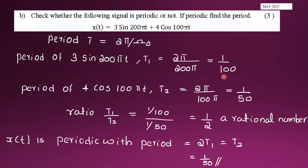Next problem: check whether the following signal is periodic or not, and if periodic find the period. x(t) = 3sin(200πt) + 4cos(100πt). For continuous-time signals, T = 2π / ω₀. The period of 3sin(200πt) is T1 = 2π / 200π = 1/100.